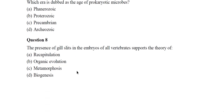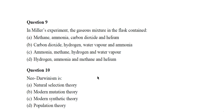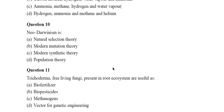Question 8: The presence of gill slits in the embryos of all vertebrates supports the theory of — the correct answer is organic evolution, option B. Question 9: In Miller's experiment, the gaseous mixture in the flask contained — correct answer is option C: ammonia, methane, hydrogen, and water vapor.